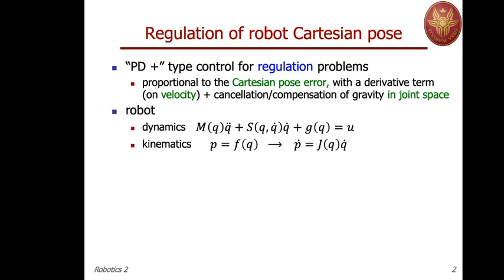We can consider a PD-plus type of control, namely including gravity in the picture from the beginning. Gravity may be fully cancelled by non-linear feedback or compensated at the desired pose. The main aspect of the controller that we will see is that the error will be defined in terms of the Cartesian pose.